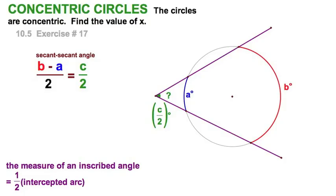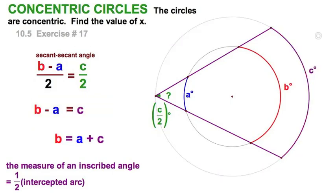This is going to simplify really nicely. Multiply both sides of the equation by two, and I better restore this outer circle so you can see the full picture. We can express this as B minus A equals C, or B is equal to A plus C.